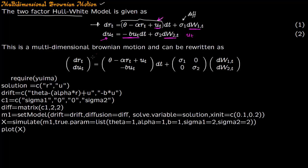So we are going to rewrite this as [dr_t; du_t]. So this parameter I am just going to copy as such: theta minus alpha*r_t plus u_t and then minus b*u_t times dt. So this is for a multi-dimensional Brownian motion. This part is the drift and the second part is the diffusion.